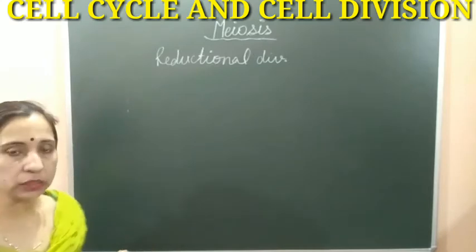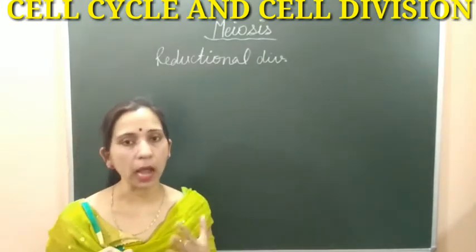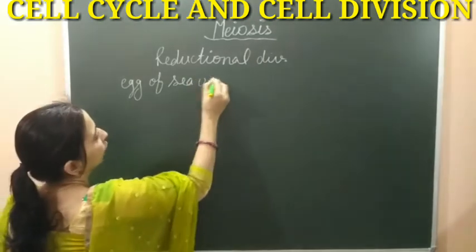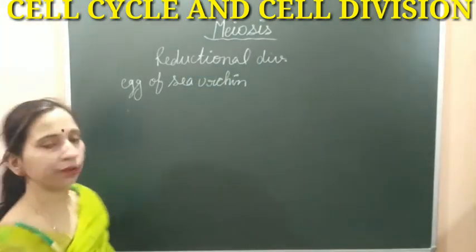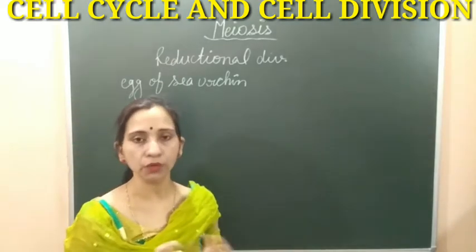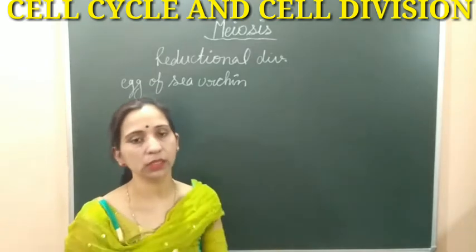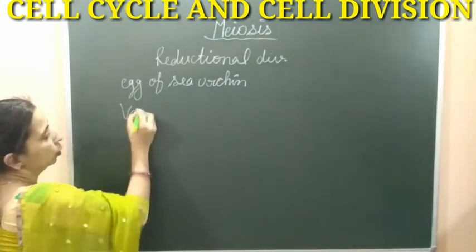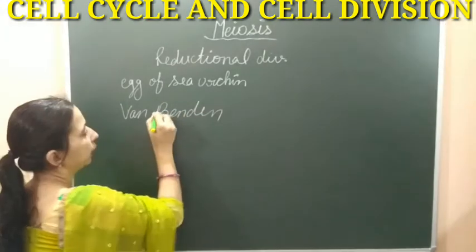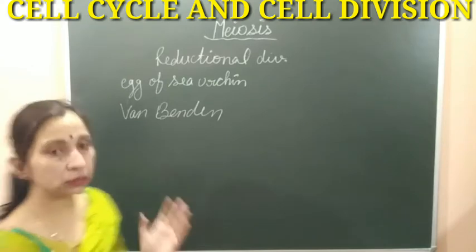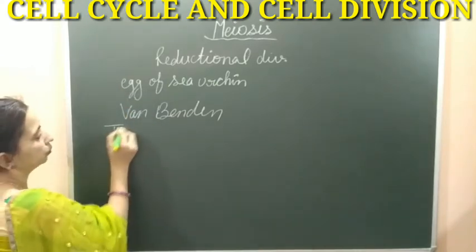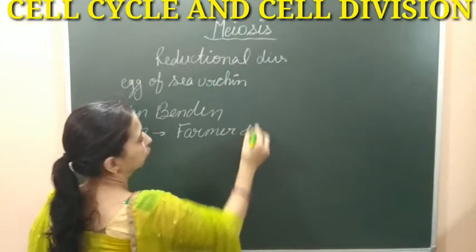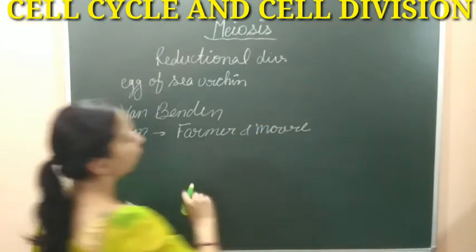This division was first studied or discovered in the egg of sea urchin. The scientist responsible for explaining meiosis — who explained that the number of chromosomes are reduced and the daughter cells get half — was the scientist named von Benden. Von Benden was the scientist who explained or discovered meiosis. But the term 'meiosis' was given by the scientists Farmer and Moore. Farmer and Moore are the two scientists who gave the term meiosis.